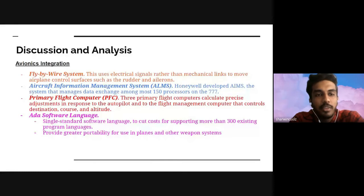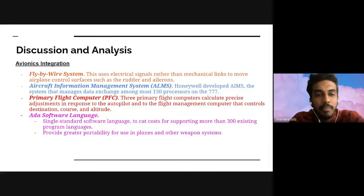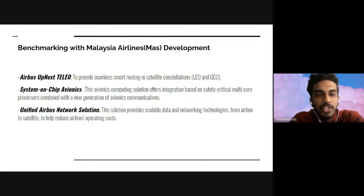There are four factors in this avionics integration. First is the fly-by-wire system, which uses electrical signals rather than mechanical links to move airplane control surfaces such as rudders and ailerons. Second is the Aircraft Information Management System (AIMS): Honeywell developed AIMS, the system that manages data exchange among 150 processors on the 777. Third is the Primary Flight Computer (PFC): three primary flight computers calculate precise adjustments in air response to the autopilot and flight management computers that control destination, cost, and altitude. Fourth is ADA software language, a single standard software language to cut costs for supporting more than 300 existing program languages, also providing greater portability for use in planes or other weapon systems.